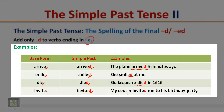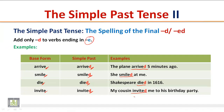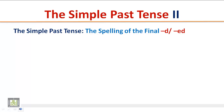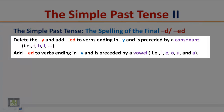Rule 2: For verbs ending in Y preceded by a consonant (such as T, B, L, etc.), delete the Y and add IED. For verbs ending in Y preceded by a vowel (such as I, E, O, U, and A), add only ED.